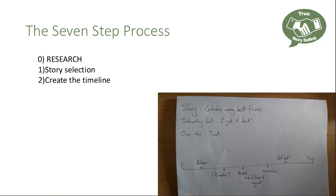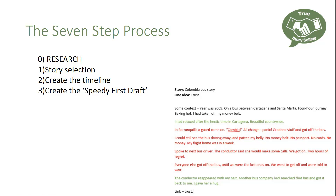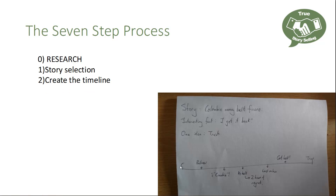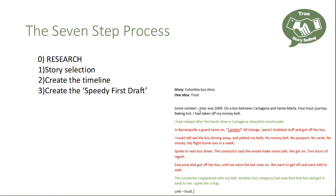Step three is what I call the speedy first draft. This only emerged from the work group I did, because at that point I told my students to go and write me a story — and they all struggled because they had to contend with the blank screen. In the speedy first draft, we take each timeline element and give it a paragraph. So 'context' gets its own paragraph: 'The year was 2009, I was on a bus...' Each item gets its own paragraph with really basic sentences. We're not trying to write the whole email — we're creating an embryo story.